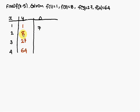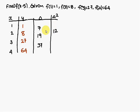Here 8 minus 1 is 7, so we write 7 in between these two numbers. Similarly 27 minus 8 is 19, and 64 minus 27 is 37. Next differences: 19 minus 7 is 12, and 37 minus 19 is 18. The next difference is 18 minus 12 is 6.